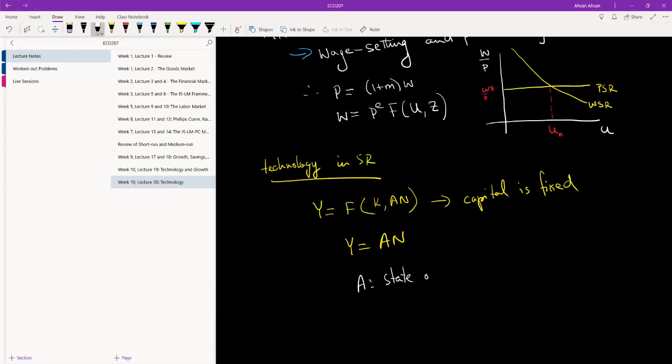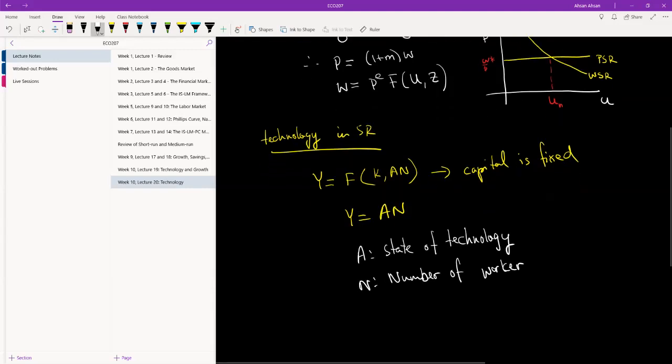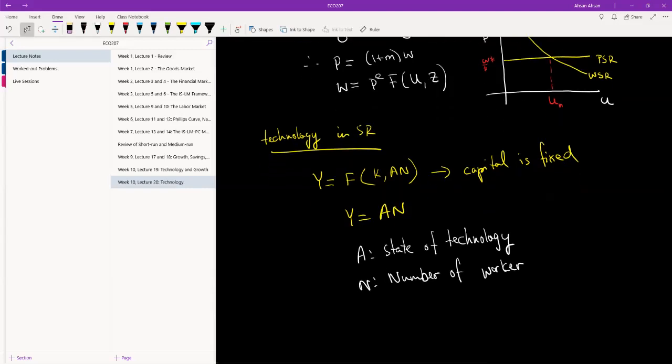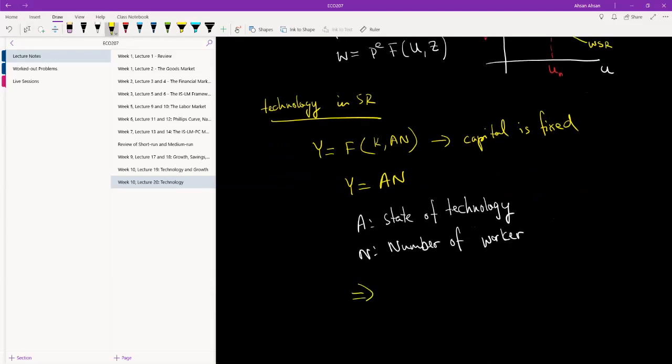If we have capital here but capital is a constant, that doesn't really add anything to our model. A is technology, the state of technology, and N is the number of workers. What we can do is calculate N, which is given by Y divided by A.